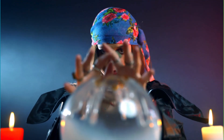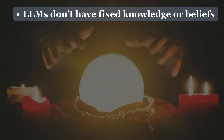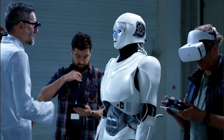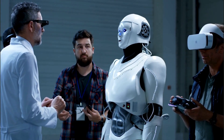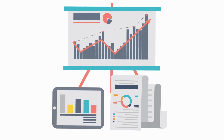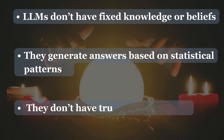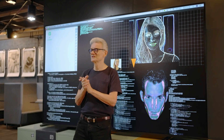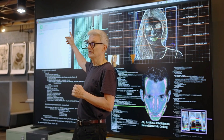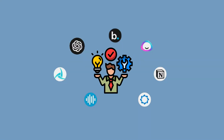This prediction-based design has some important implications. LLMs don't have fixed knowledge or beliefs. They don't understand information the way humans do — their responses are driven by patterns, not by reasoning or comprehension. They generate answers based on statistical patterns; instead of providing answers grounded in knowledge, LLMs are built to predict what comes next based on probability. They don't have true comprehension — they simply predict what text sequence is most likely to follow based on prior examples. This design explains both the impressive capabilities and the significant limitations of these tools, particularly in academic contexts where deep understanding and critical thinking are essential.